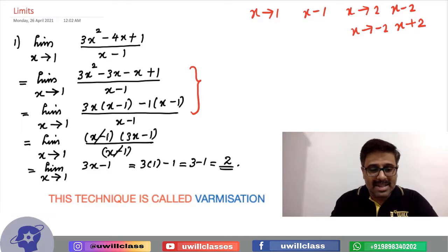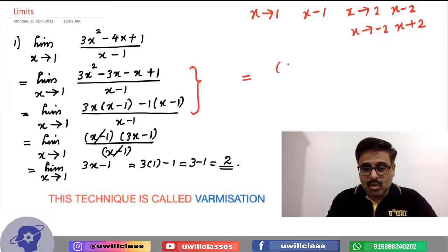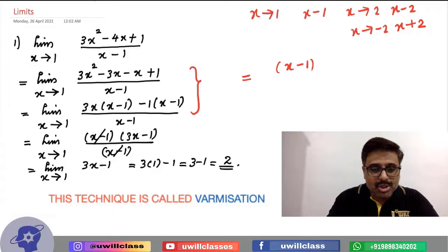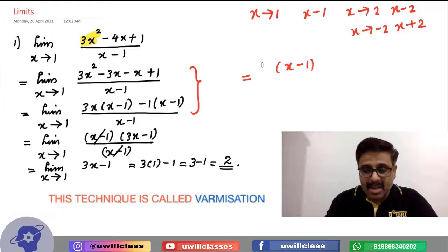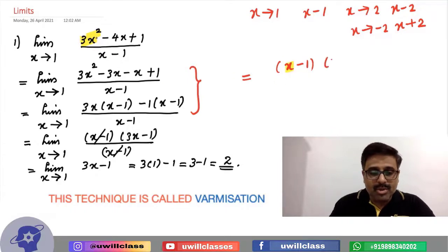Now, going ahead with the next step directly, as I said, x tends to 1, so one of the factors is x minus 1. Now, what you are supposed to do? Listen carefully. First number divided by first number. So, 3x squared divided by x, what will we get? 3x.